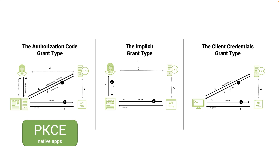The Implicit grant type was designed for public clients such as single page applications that cannot hold any secret to exchange the code for an access token. In this flow, after user consent, the user is redirected to the client with an access token directly, and then the client can request protected resources. We will get back to this in a new episode.